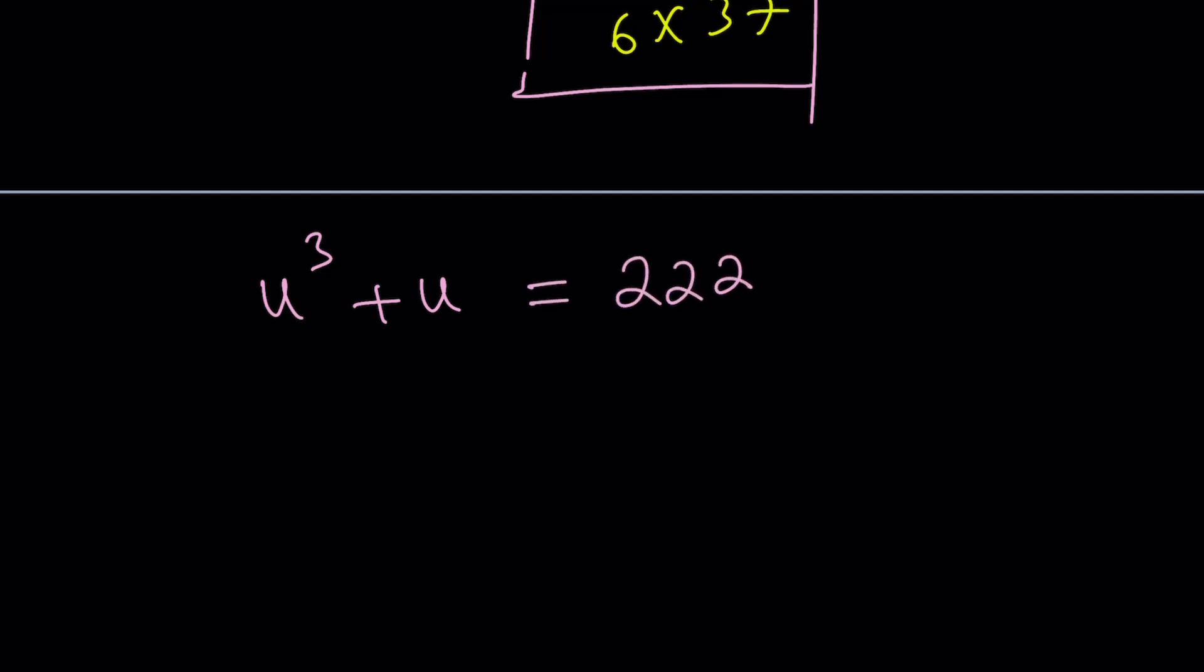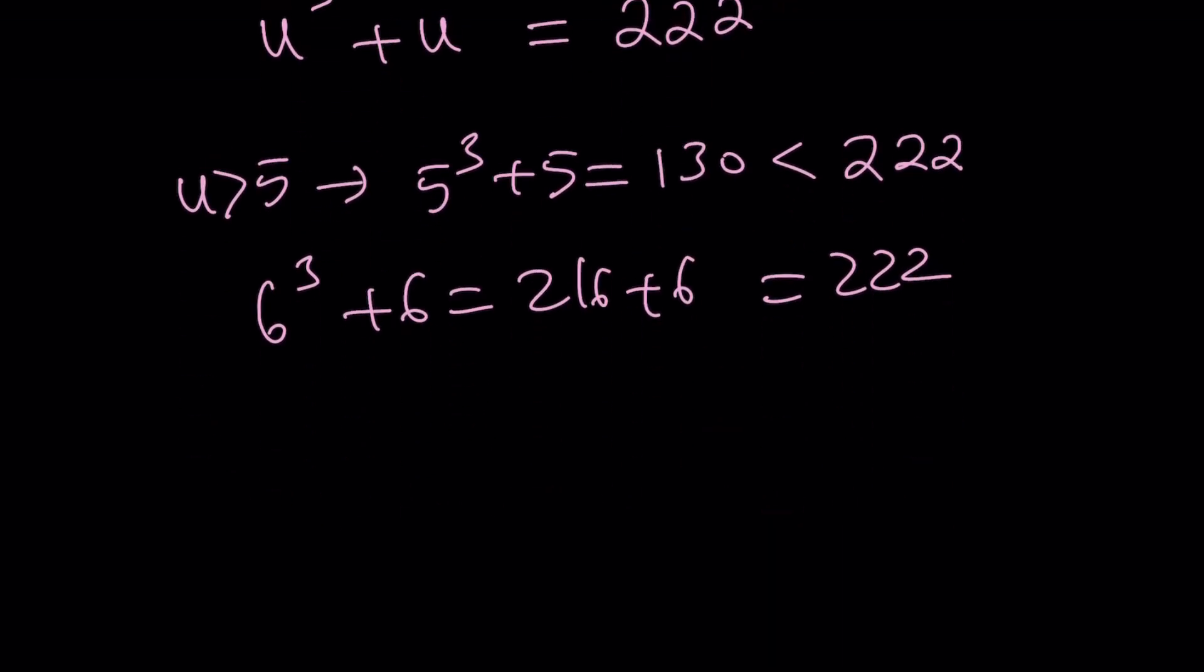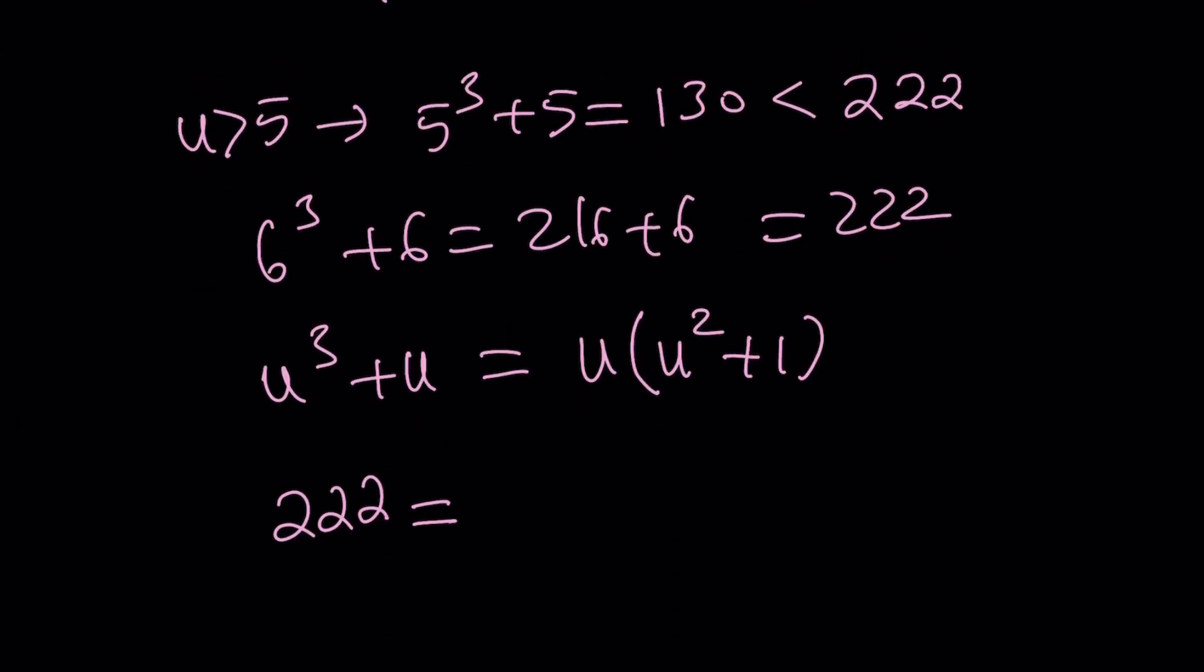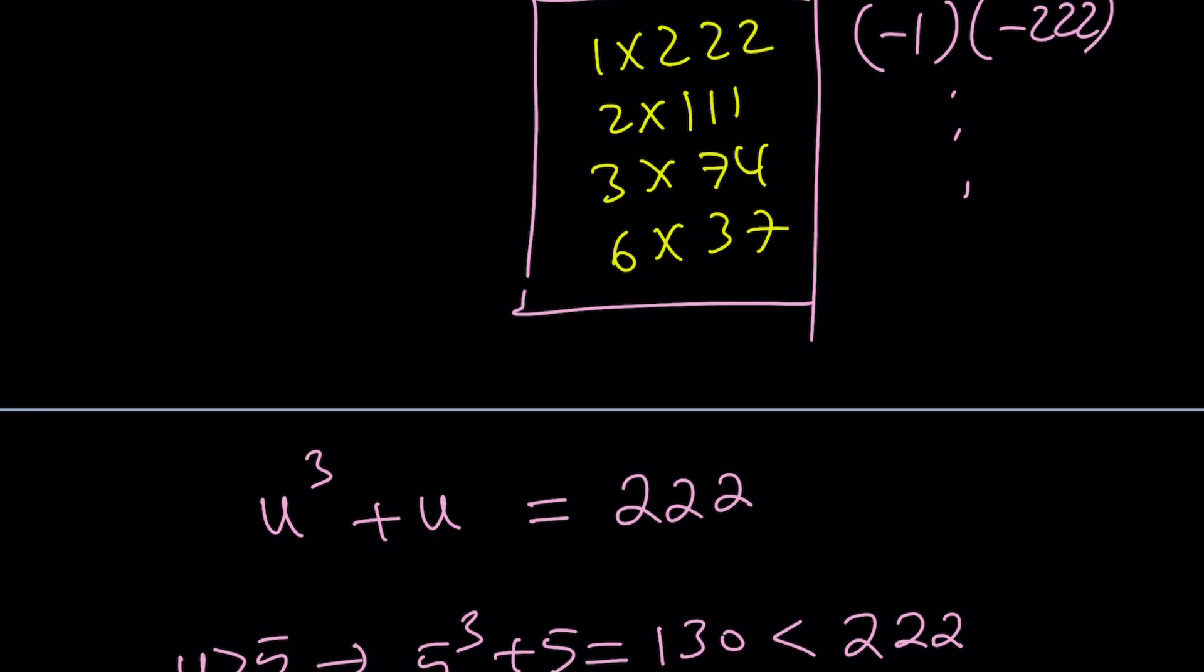Now, I'm thinking about the size of u. If u is a positive integer, then u must be greater than 5, because 5 cubed plus 5 equals 130, and that's definitely less than 222. So anything greater than 5 should hopefully work, and that actually happens to be 6 in this case, because 6 cubed plus 6 is 216 plus 6, which happens to be 222. Awesome. And by the way, one thing worth mentioning here is u cubed plus u can be factored as u times u squared plus 1. And if you think about factoring 222 into the product of one more than a perfect square and a number, that would actually give you, and looking at the factors, that should give you an idea.